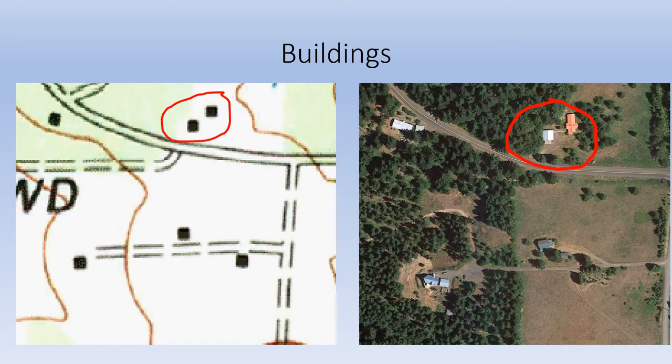A barn, a shed, or a house all have the same map symbol. Some buildings have unique symbols, such as churches, schools, and forest service offices, for example.